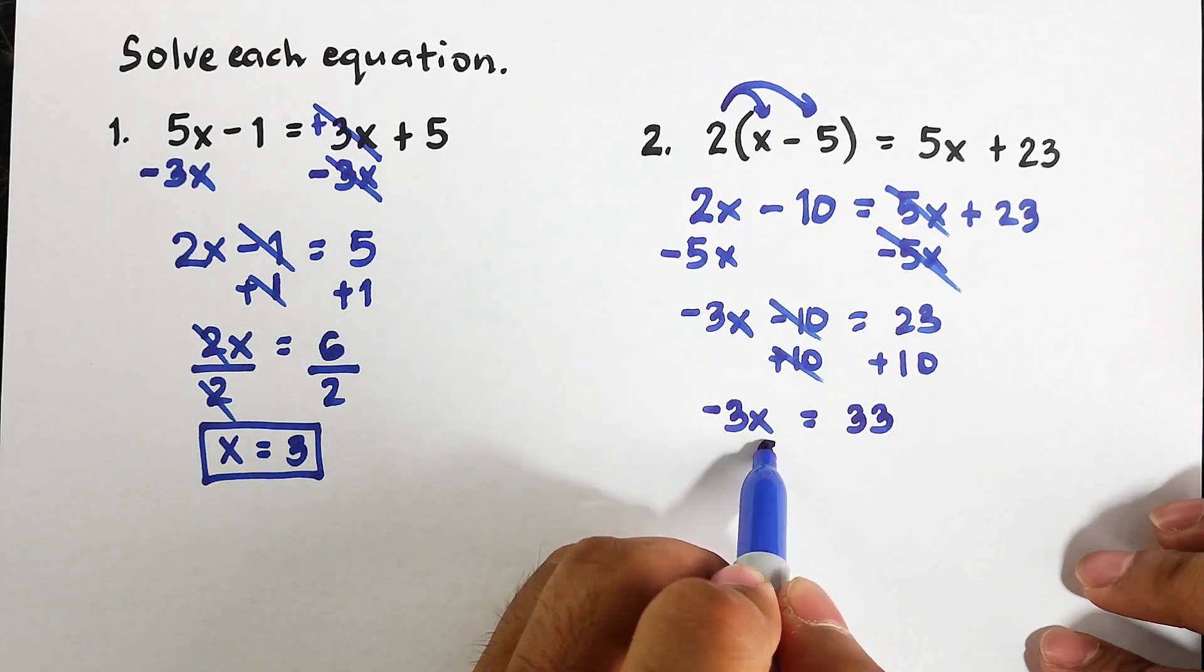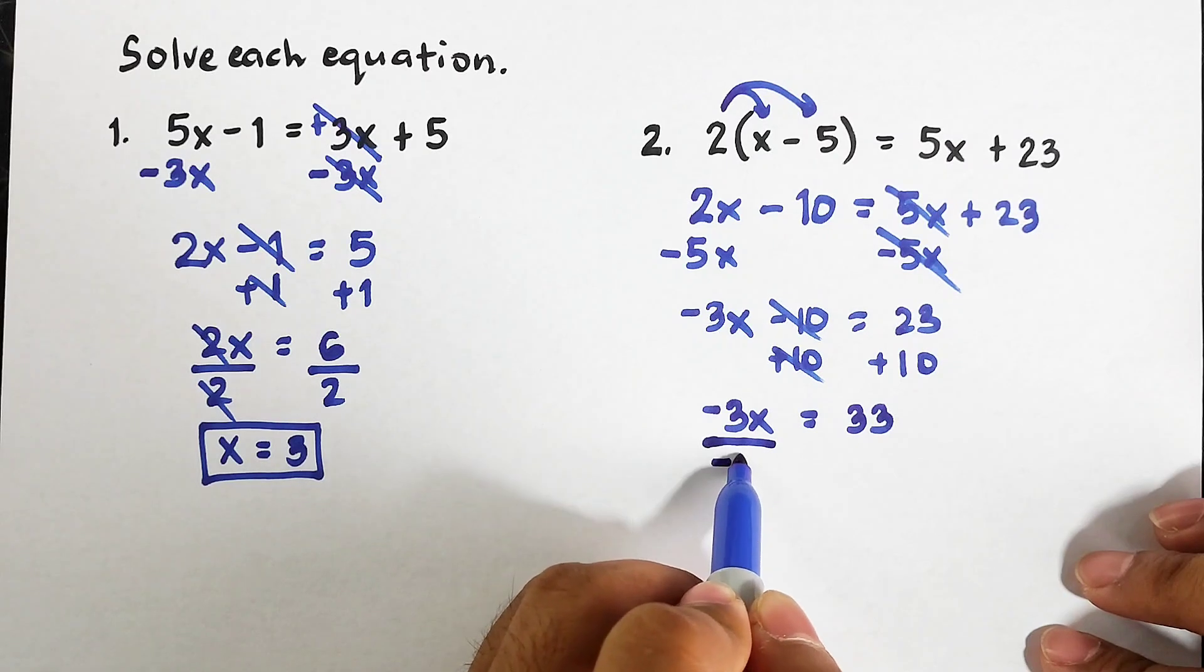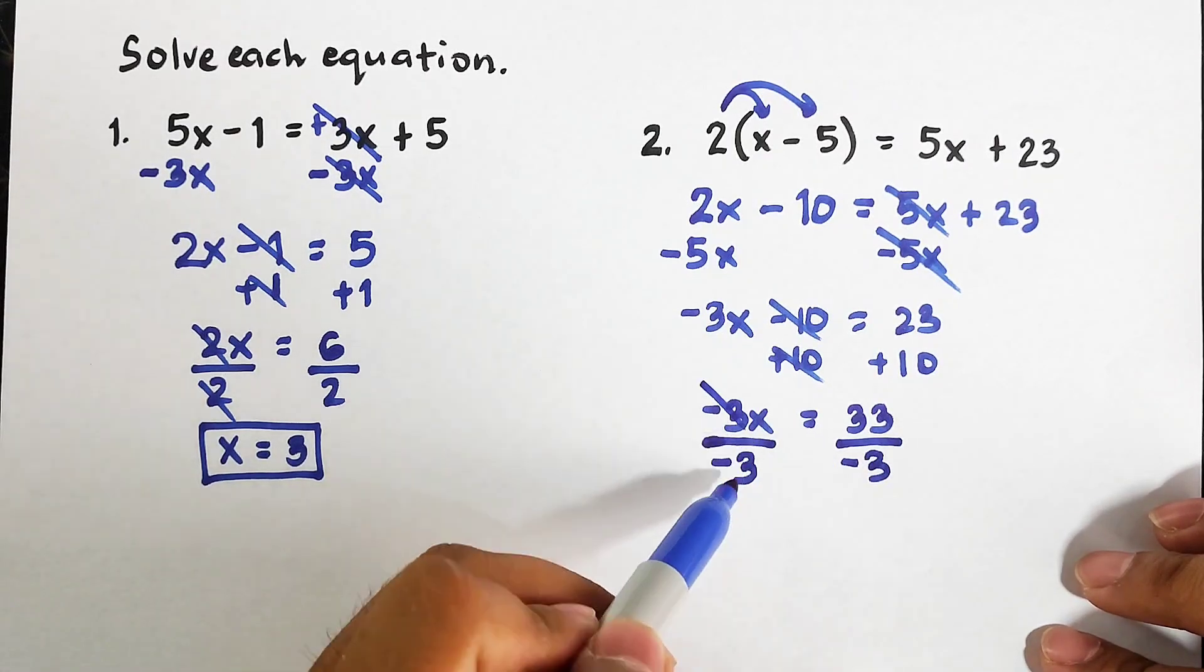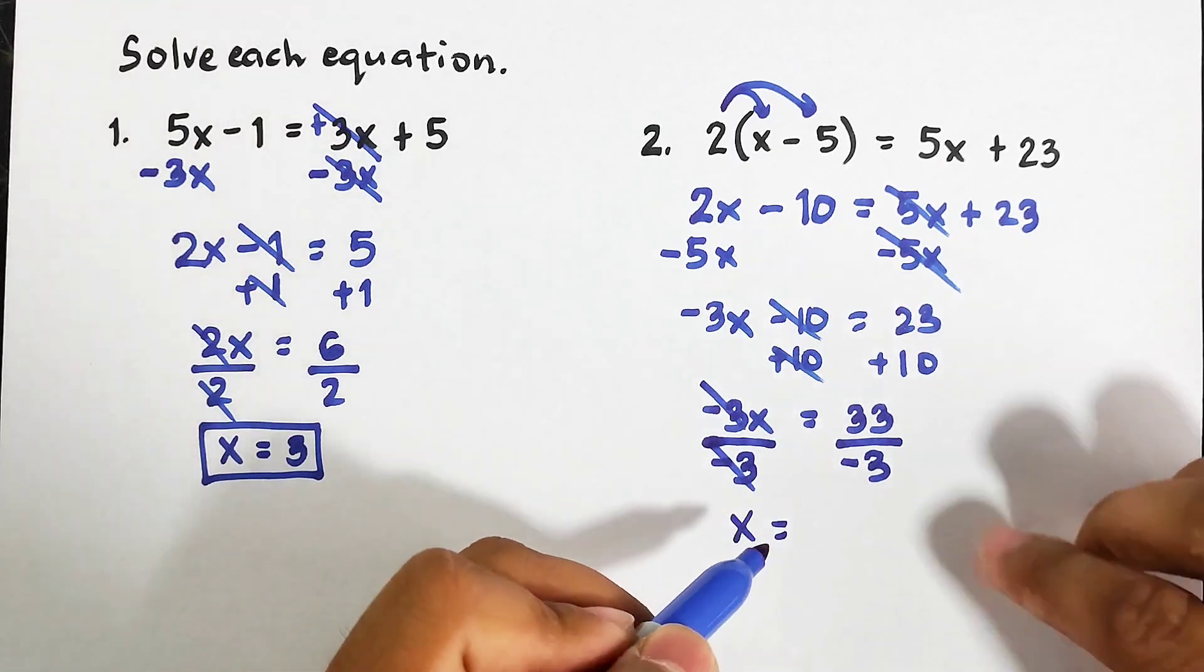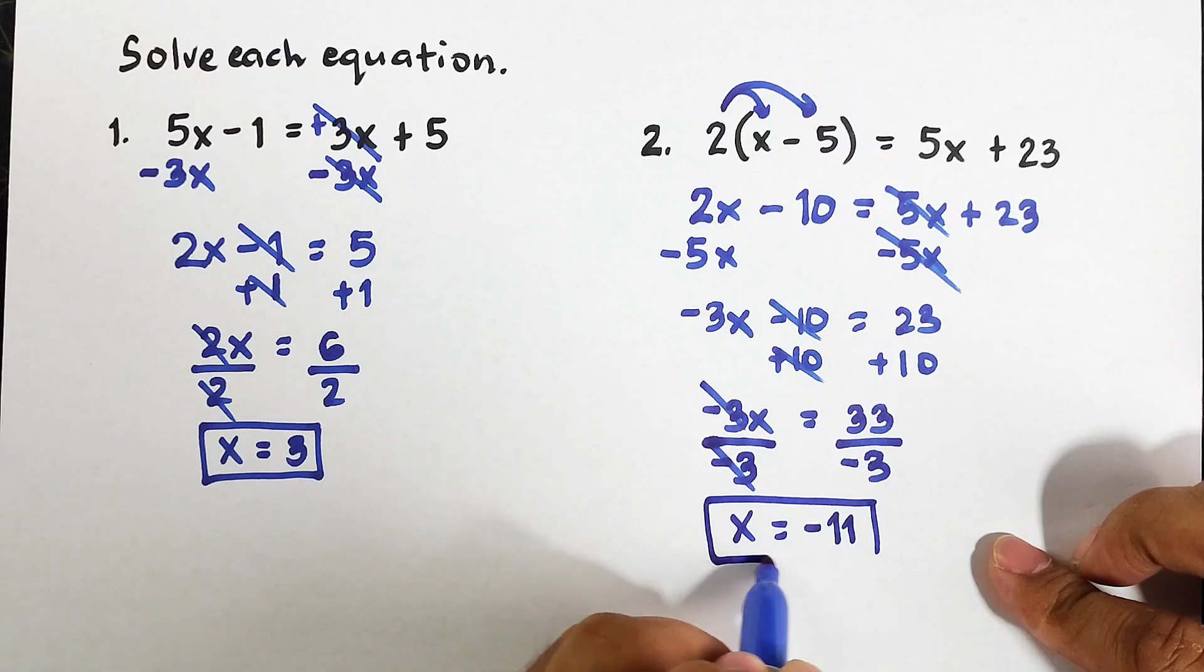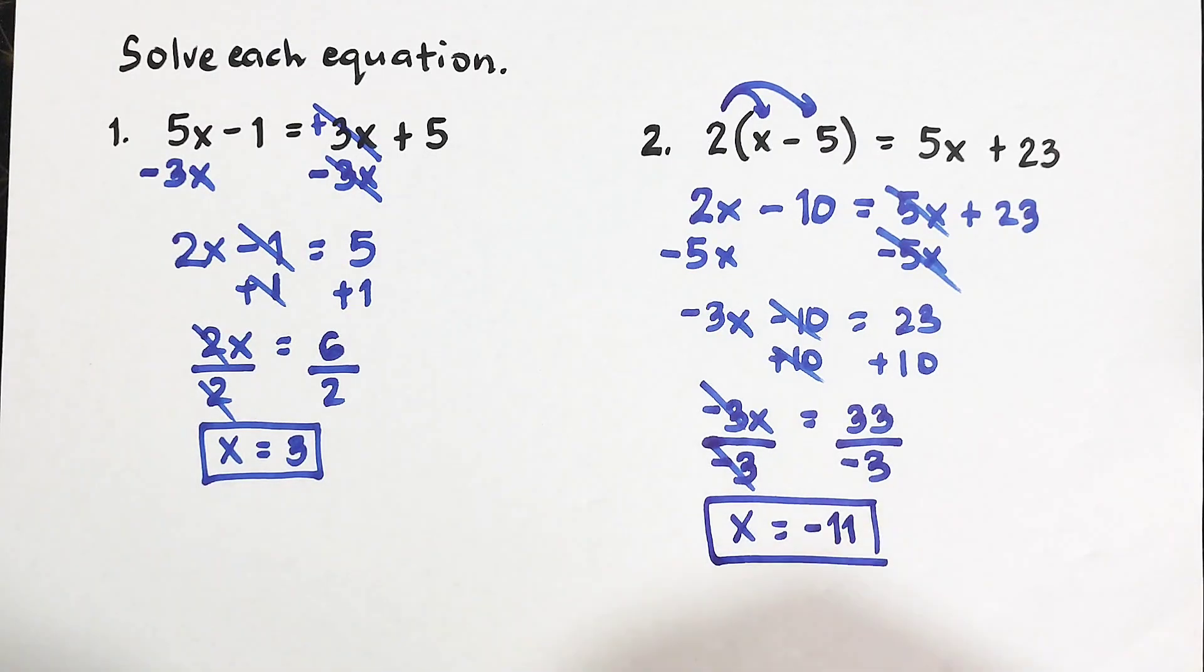Now as you can see, the coefficient of x is negative 3. That would be our divisor. Divided by negative 3, divided by negative 3. Cancel this one. Your x is equal to negative 11.